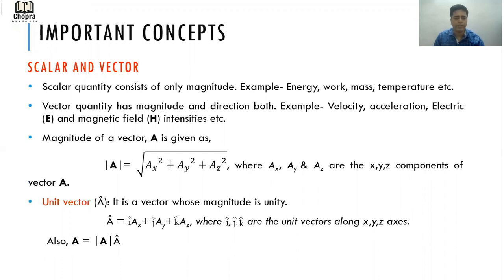What is a unit vector? First of all, the notation of unit vector is there is a cap over A, so that is  cap. It is a vector whose magnitude is unity. A vector is equal to î·Ax + ĵ·Ay + k̂·Az, where î, ĵ, k̂ are the unit vectors along x, y, z axes.